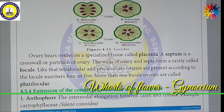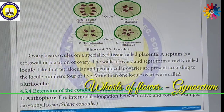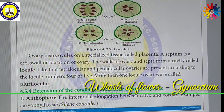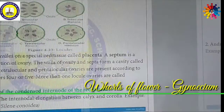Now we are going to discuss the extensions of the condensed inter-nodal region of the receptacle — whether Calyx and Corolla are joined together or separated, and the relative positions of Corolla, Androecium, and Gynoecium. First, we shall see about the Anthophore. The inter-nodal elongation between Calyx and Corolla — when long — is called an Anthophore. Triophyllum is a very good example.